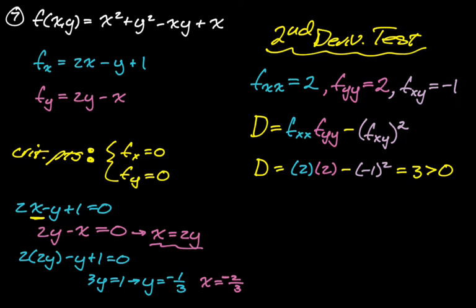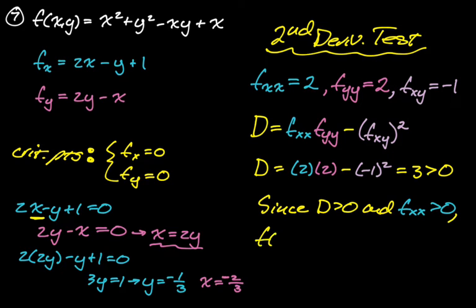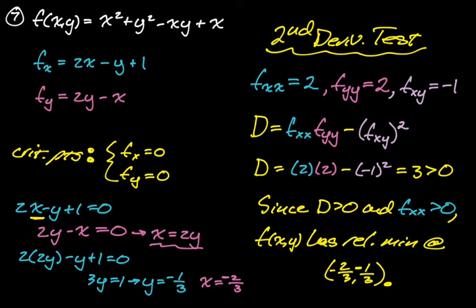Since D > 0, we also need to know if partial xx is positive or negative. Partial xx is 2, which is greater than 0. So since D > 0 and partial xx > 0, we have a relative minimum. This is like the Calc 1 second derivative test — the trace parallel to the x-axis is concave up, so we must be at a minimum.